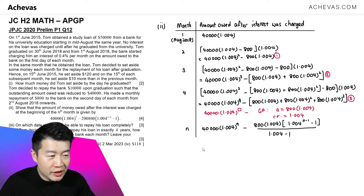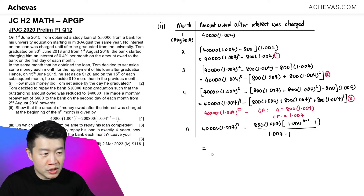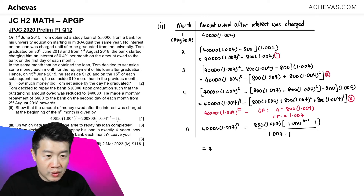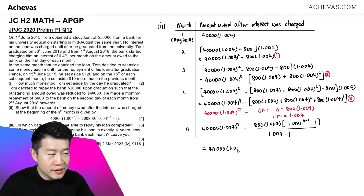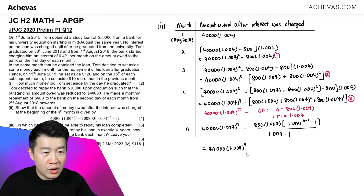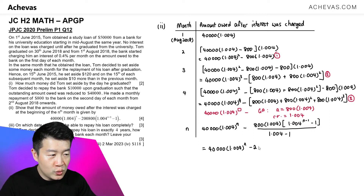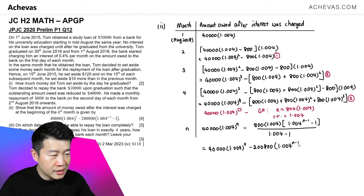We can do a quick simplification. This gives us $40,000 times 1.004 to the power of n, and taking 800 times 1.004 divided by (1.004 minus 1), we get 200,800 times (1.004 to the power of n minus 1), minus 1. Shown.